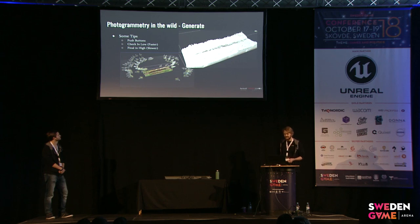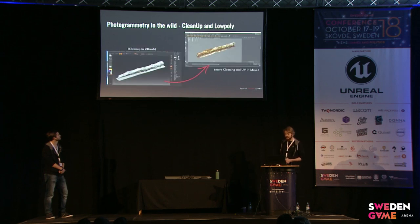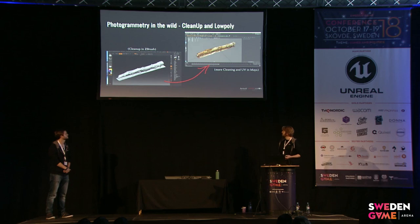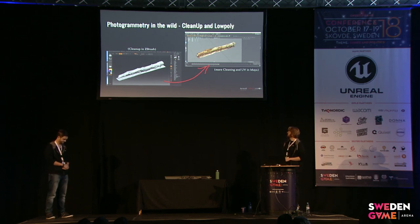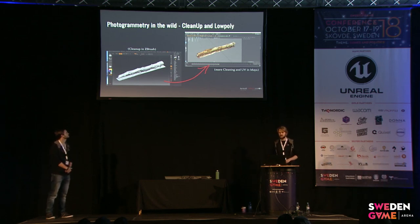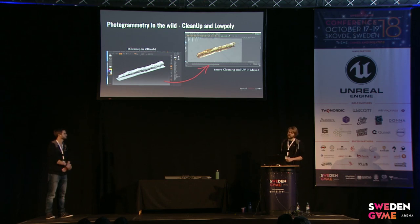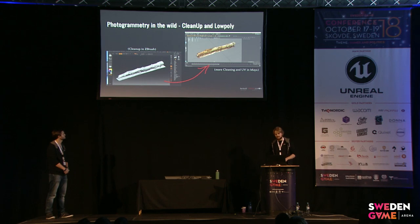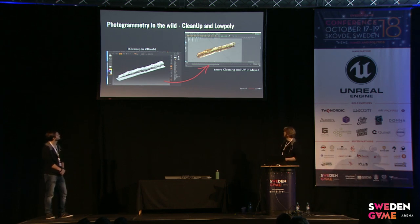After that, I do some cleanup because we also need a low poly. I clean it up first in ZBrush, then send it over to Maya for more close-up cleaning and of course UV mapping. As you can see here, I've already baked the things, and that's pretty much how it looks. Pretty good.